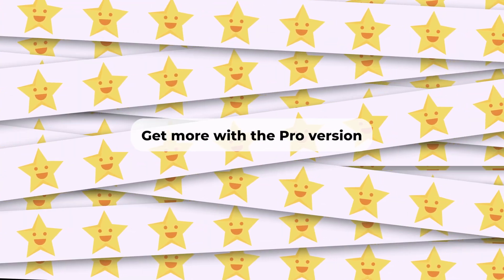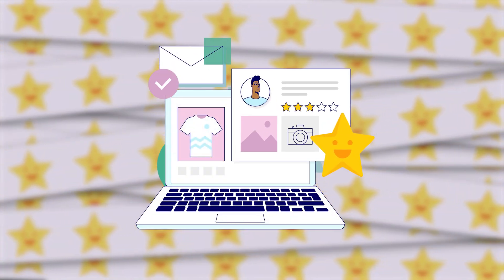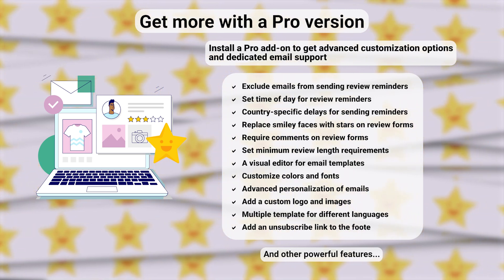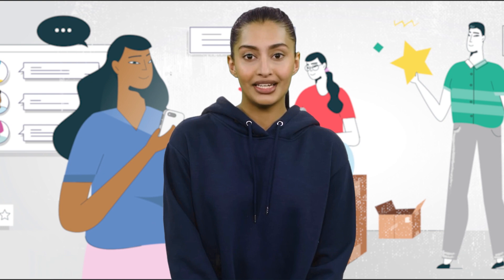Get more with the Pro version. Did you like our free plugin? There is also a Pro version available with even more powerful features. Check the link in the description below to learn about the Pro version. By following these steps and using the CusRev plugin, you can seamlessly add GTINs like UPC, EAN, JAN, or ISBN to your WooCommerce product listings. This enhances the accuracy of product information, making it easier for customers to find and identify products. Accurate product data contributes to a better shopping experience and can improve your store's visibility in search results.